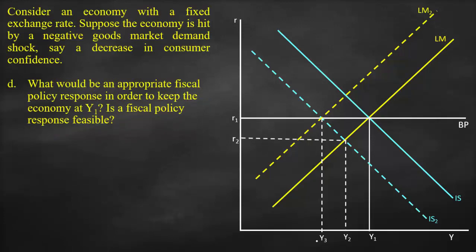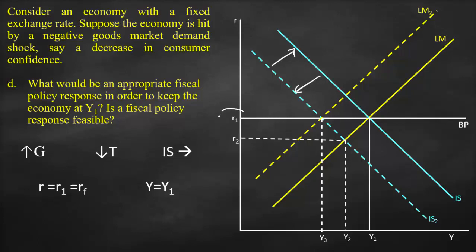For the fourth part — what would be an appropriate fiscal policy response to keep the economy at Y1, and is it feasible? Since our original shock shifted the IS curve to the left, fiscal policy — which affects the IS curve — can return it to its original level. We can use fiscal policy in the form of higher government spending or lower taxes, which shifts the IS curve back to the right to its original position. This returns us to the original equilibrium with interest rate R1 equal to RF and output equal to Y1.